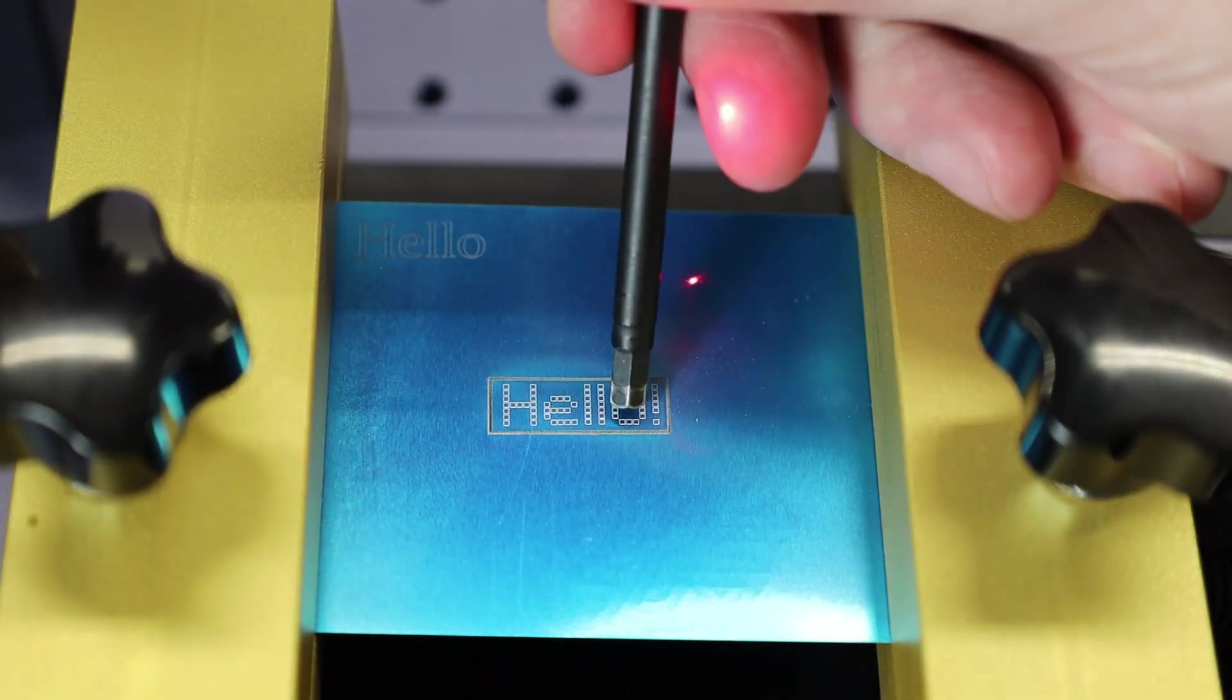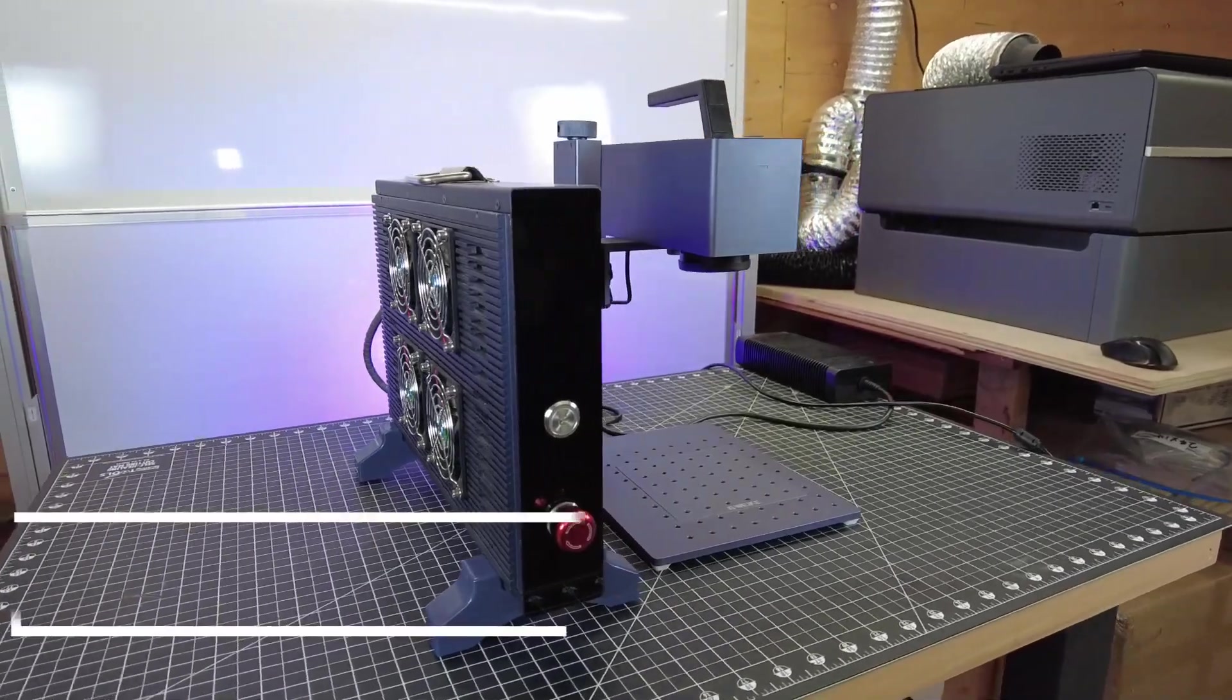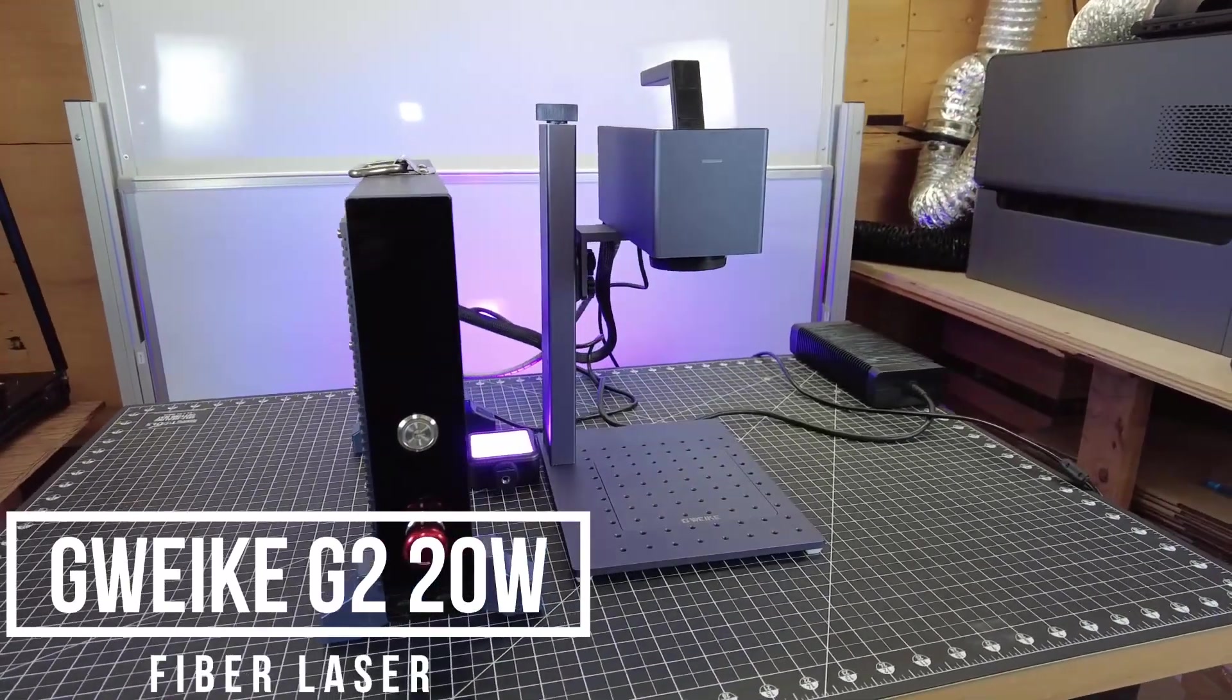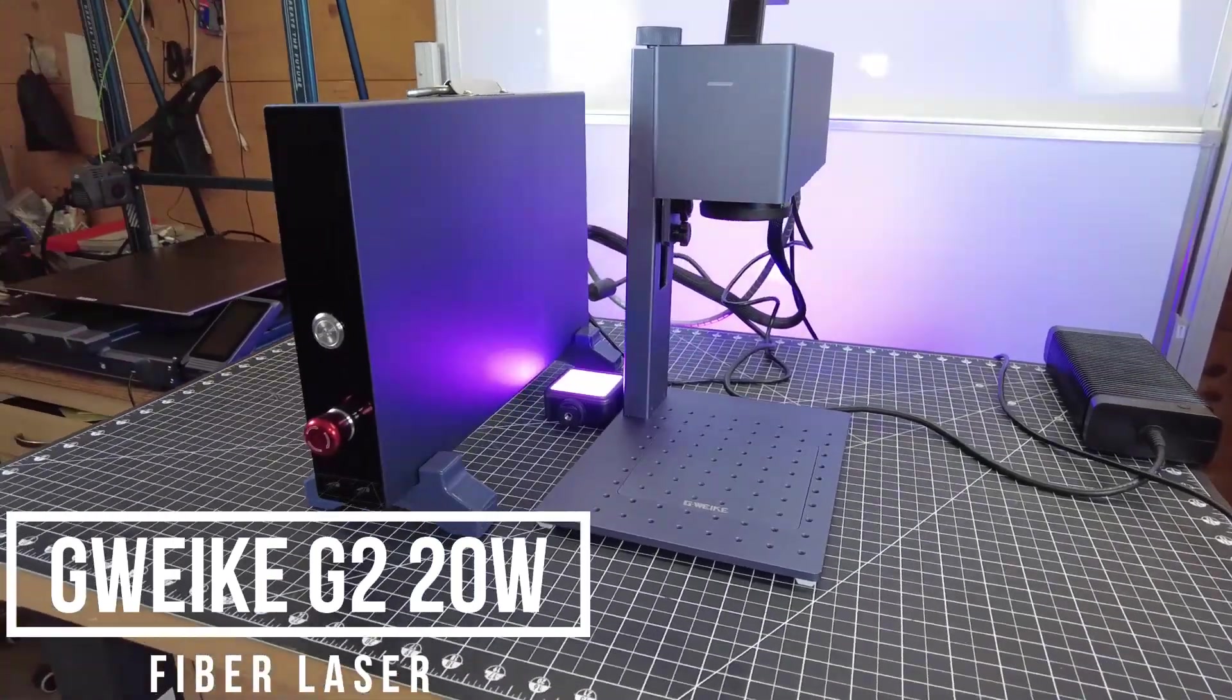So have you been looking for a laser that can engrave and even cut through metals? Well, you might want to check out this one from G-Week. This is the G2 20-watt fiber laser, and they were nice enough to send me a pre-production model to check out. So let's see what this thing can do.